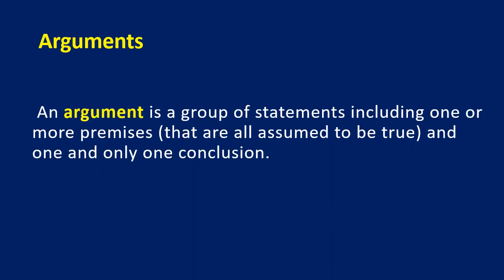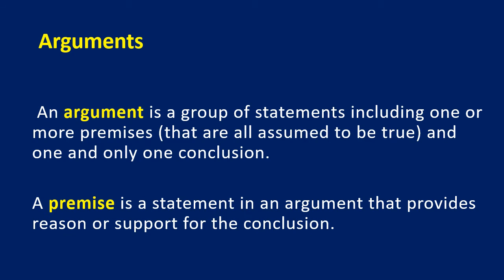An argument is a group of statements including one or more premises that are all assumed to be true, and one and only one conclusion. A premise is a statement in an argument that provides reason or support for the conclusion. So whenever you have an argument, you have premises P1, P2, up to Pn — all assumed to be true — and what you want to show is that if these premises are true, the conclusion must also be true.